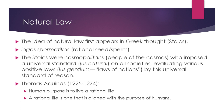It's kind of like layers. As you got further and further away from this ultimate reality — which if we were to talk about Plato and the realm of the forms — you have the idea of the logos spermaticos, or a rational seed that each person would have. The word logos means word, or more of a kind of mind. The Stoics viewed themselves as cosmopolitans, people of the universe, who imposed a universal standard on all societies, evaluating various positive laws by the universal standard of reason.